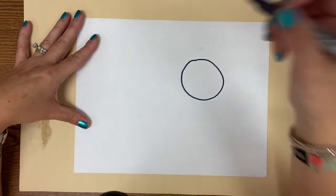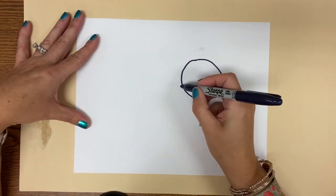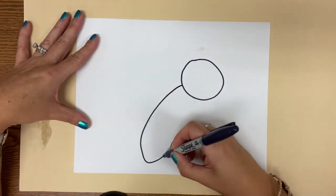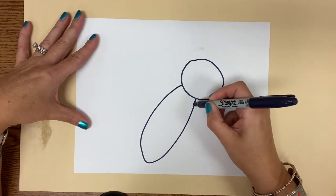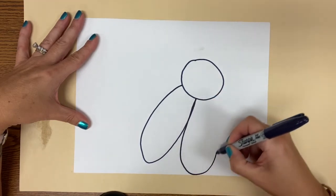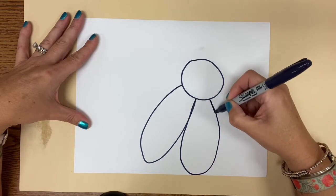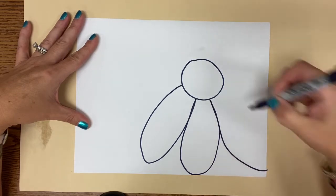And then I'm going to add some flower petals and my flower petals sort of look like large ovals. Notice that I am making them so big, they go right off the edge of the paper.